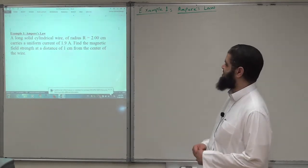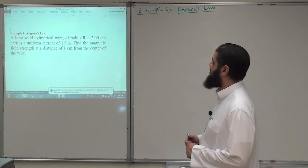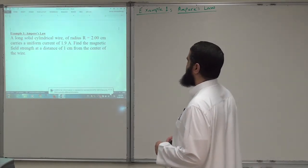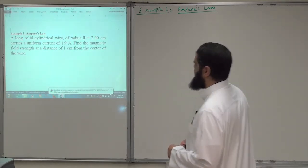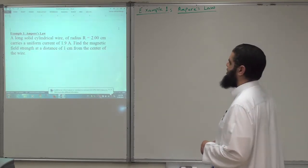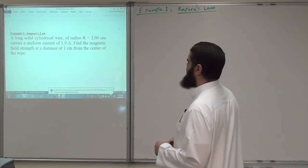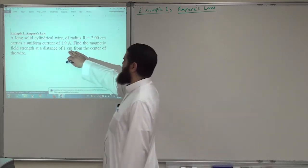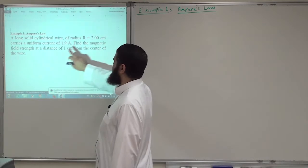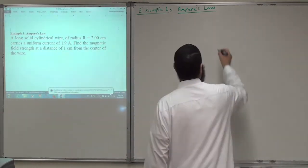Bismillah ar-Rahman ar-Rahim. This is the first example on Ampere's law. We have a long solid cylindrical wire of radius 2 cm that carries a uniform current of 1.9 Ampere. Find the magnetic field strength at a distance of 1 cm from the center of the wire — meaning how much is the magnetic field inside the wire, not outside the wire.